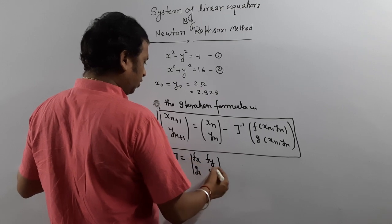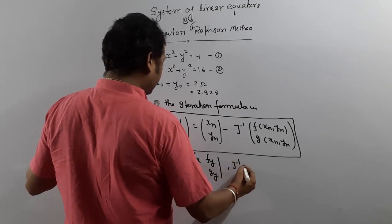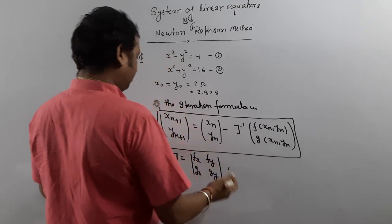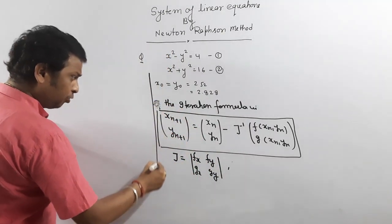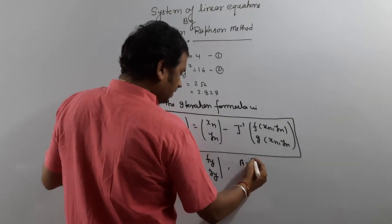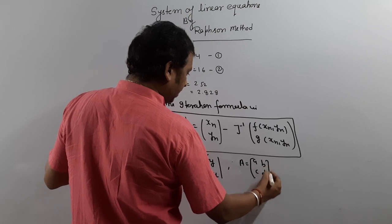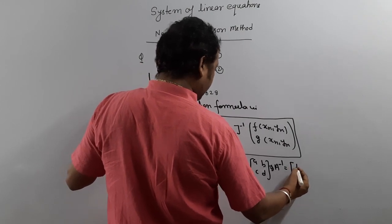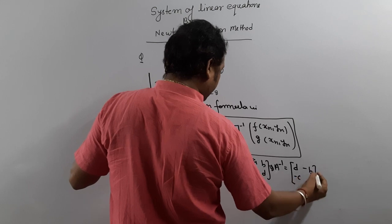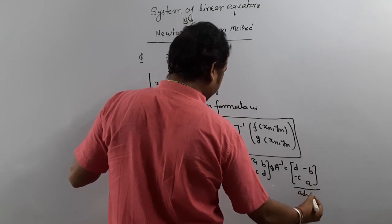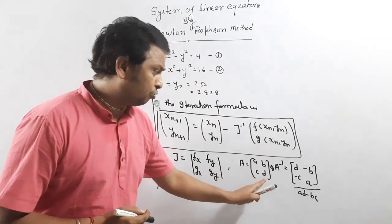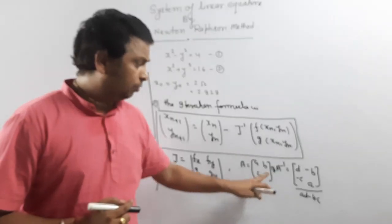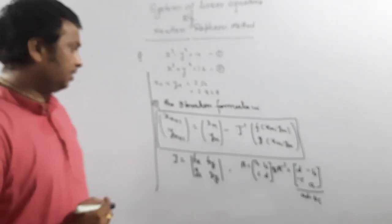And if it is a 2×2 matrix, we know what J inverse is. If A is a 2×2 matrix [A, B; C, D], then A inverse equals [D, -B; -C, A] divided by (AD minus BC). This is the inverse of a 2×2 matrix. Since we are always going to solve a 2×2 system, it is better you know this formula so you can calculate directly.